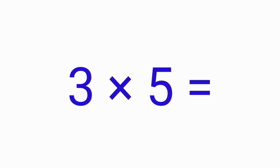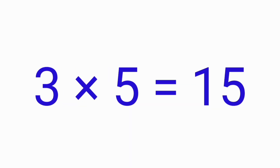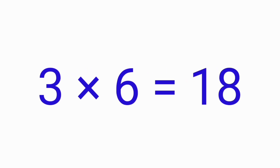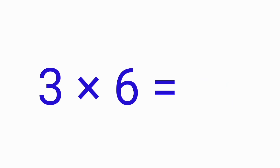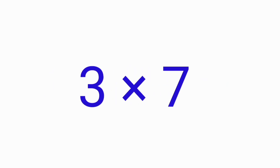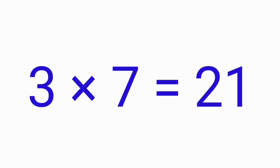Three fives are fifteen. Three sixes are eighteen. Three sevens are twenty-one.